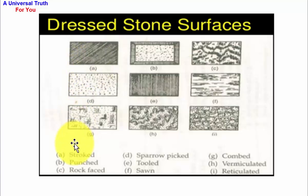The pictures are: A is struck, B is punched, C is rock faced, D is sparrow picked, E is tooled, F is sawn, G is combed, H is vermiculated, I is reticulated.